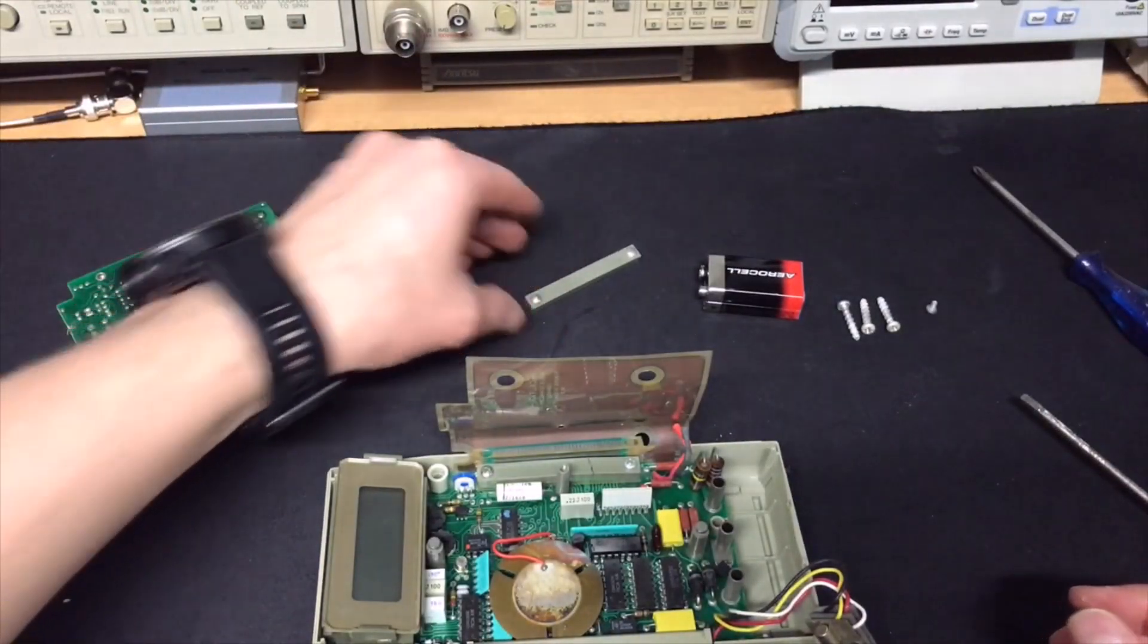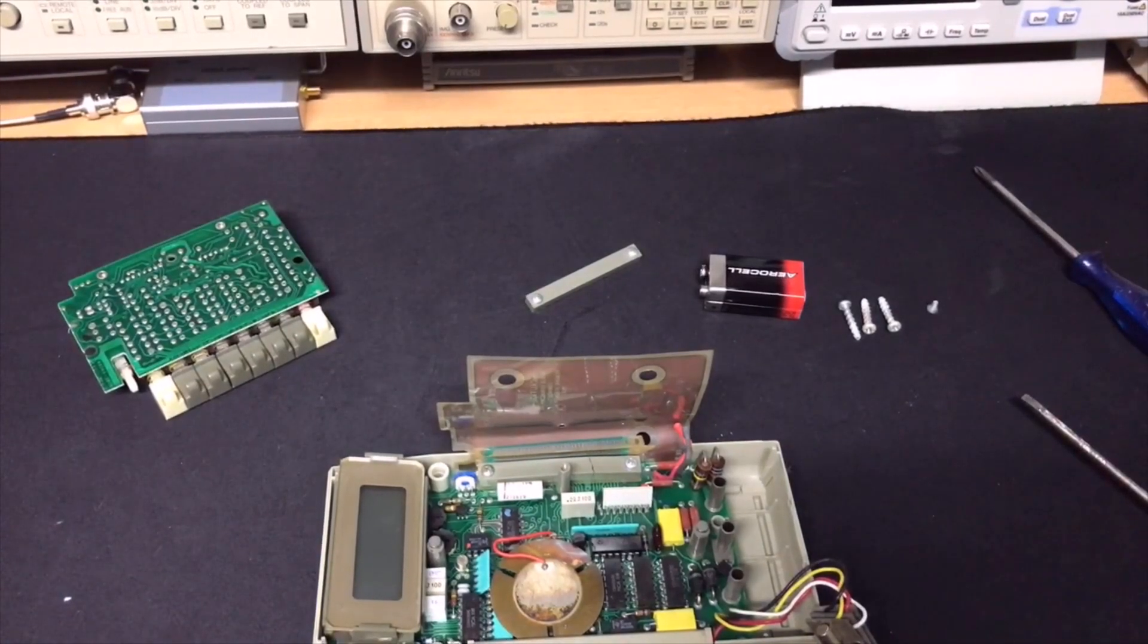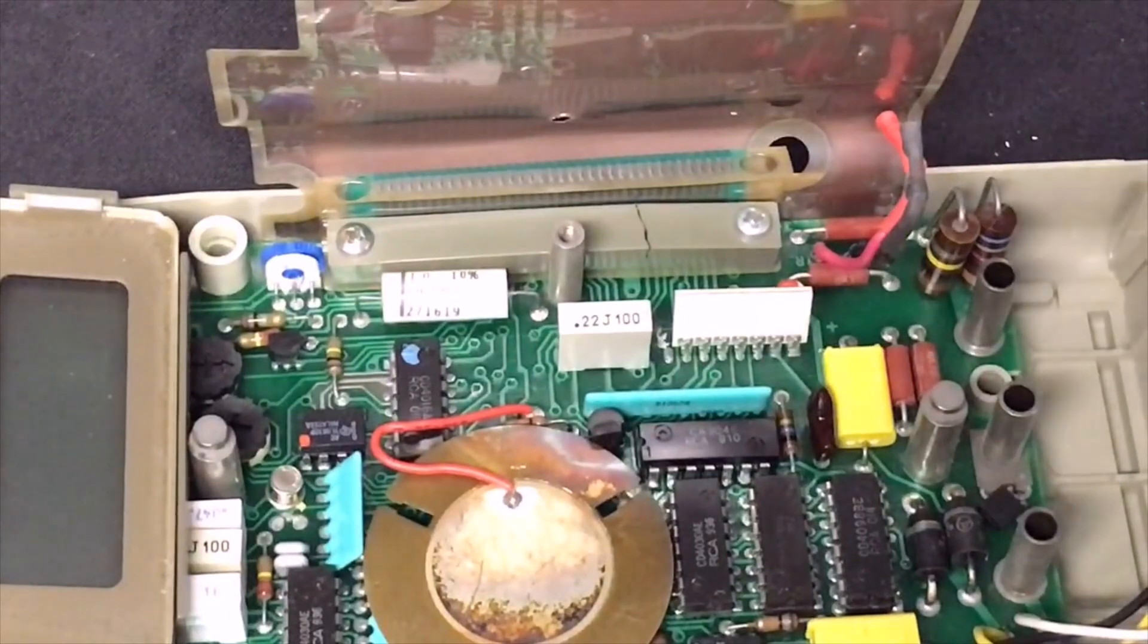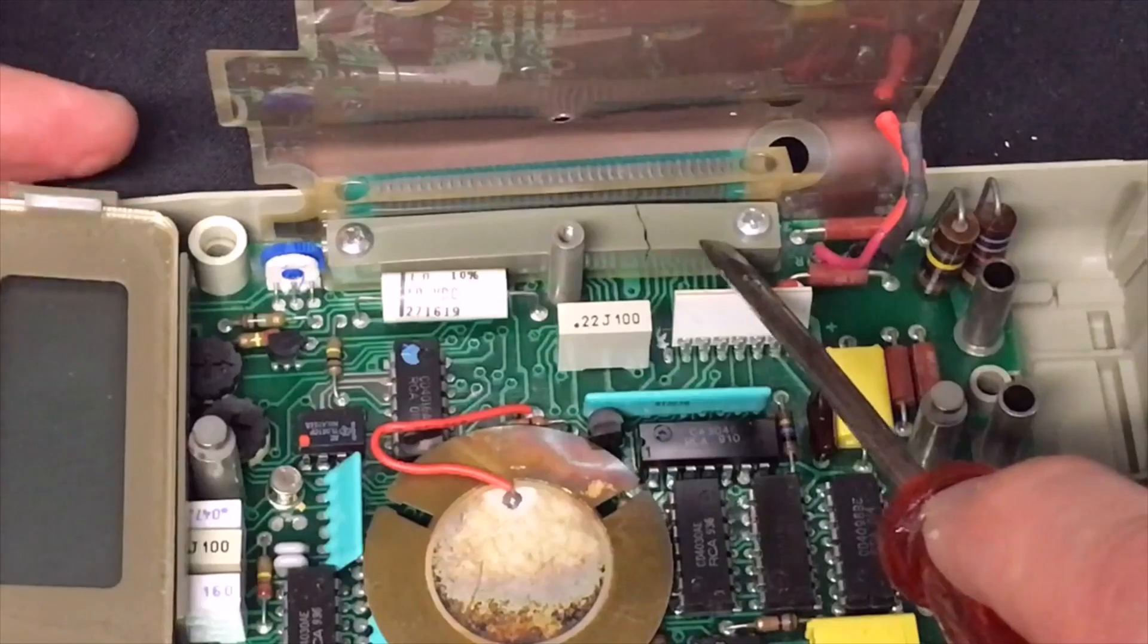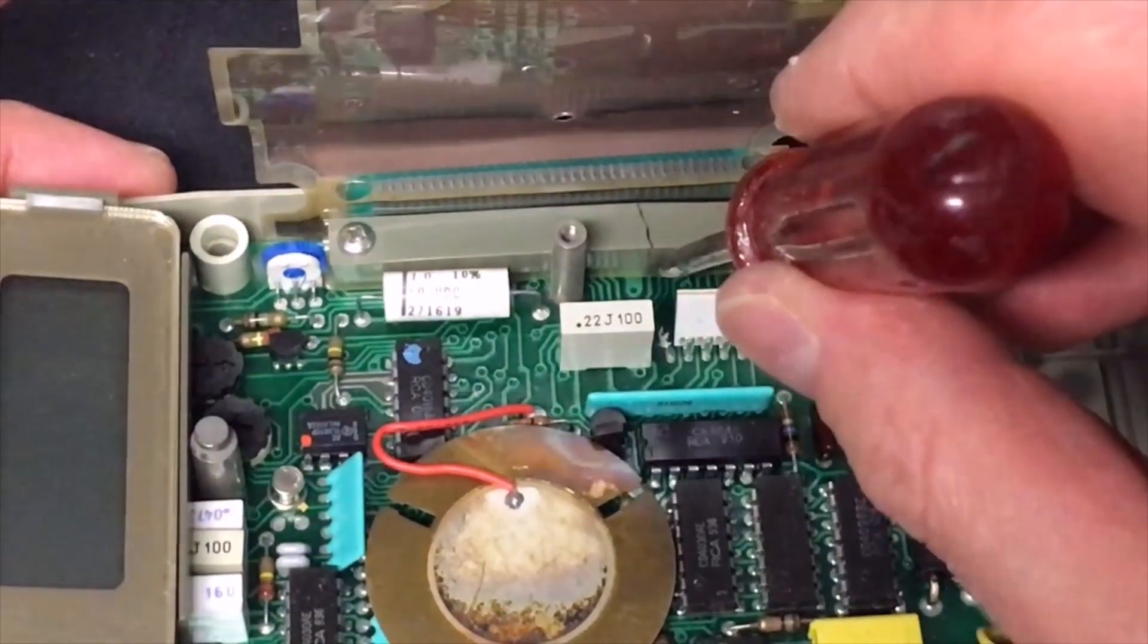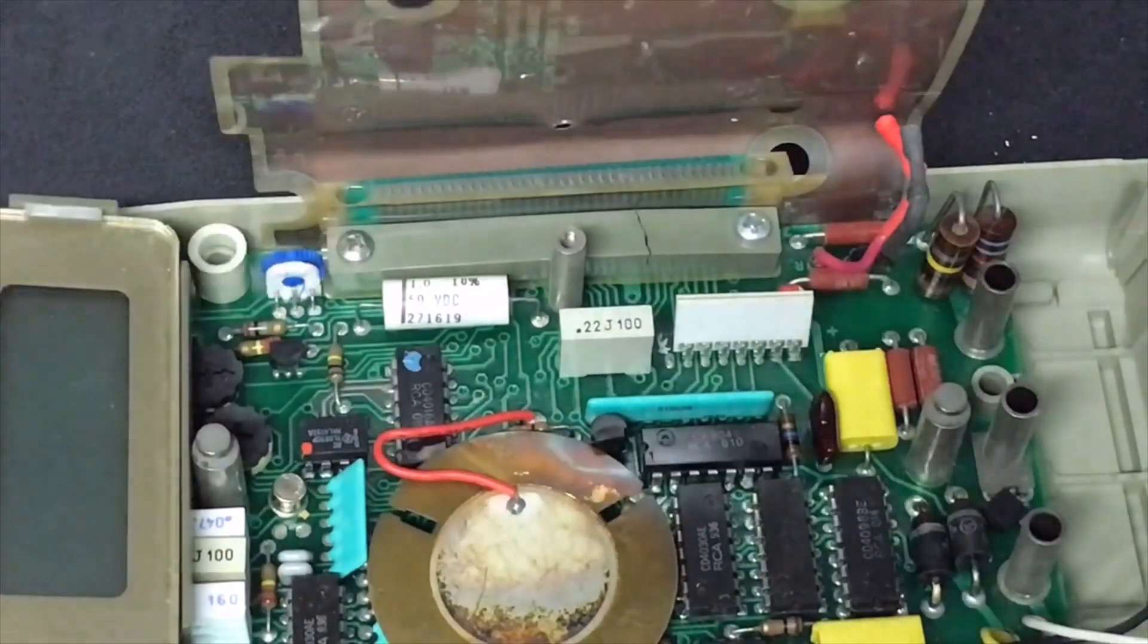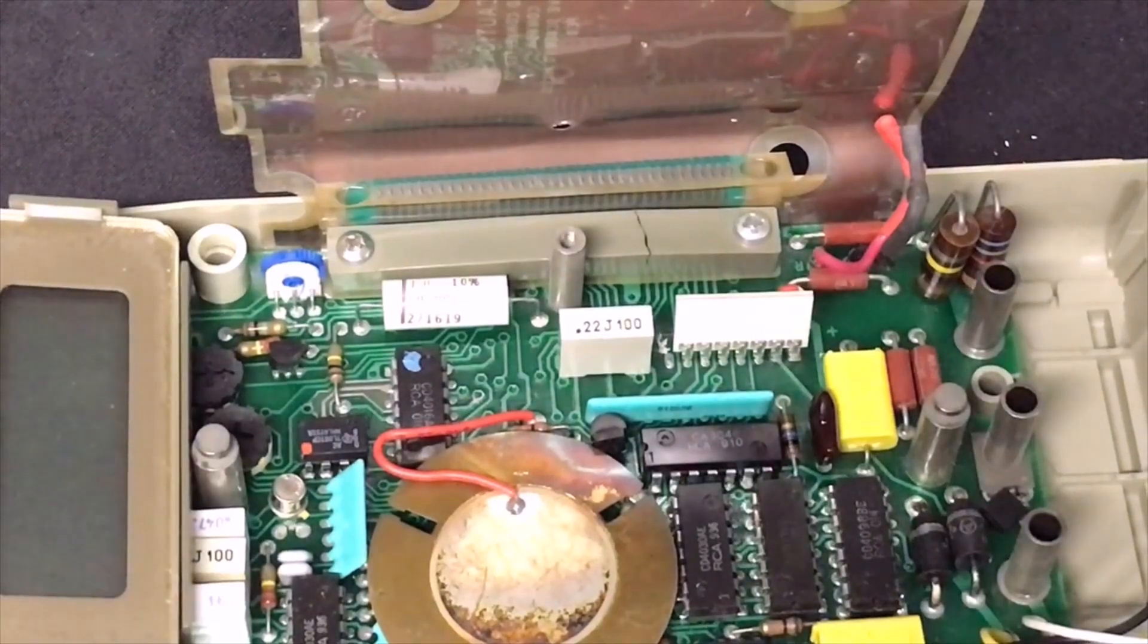But as you can see, maybe the plastic here is broken. Because this is broken, it cannot apply the force that is necessary, I think. And that's why the whole switching is not working. So let's see if we can solder wires or maybe I can glue the thing. Let's see what we can do with this.